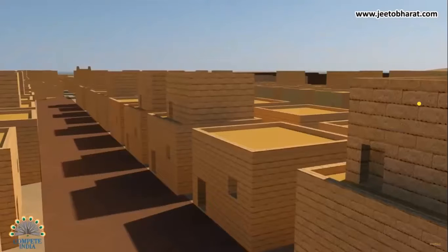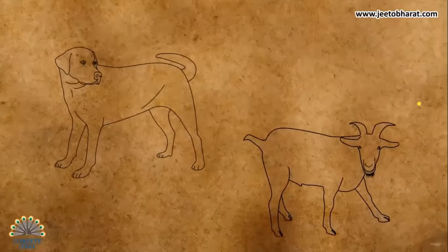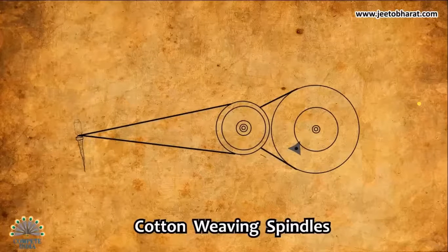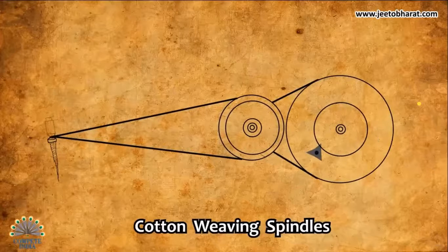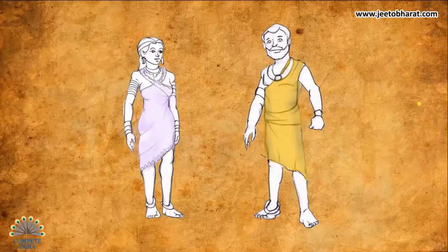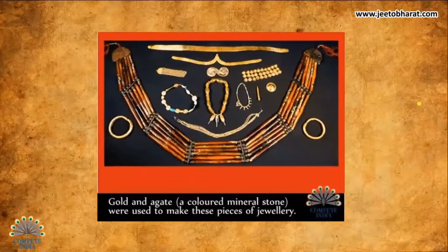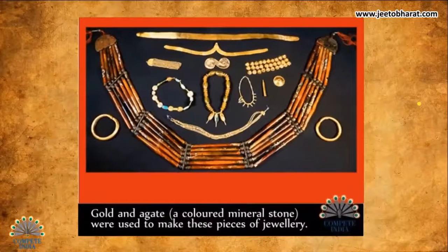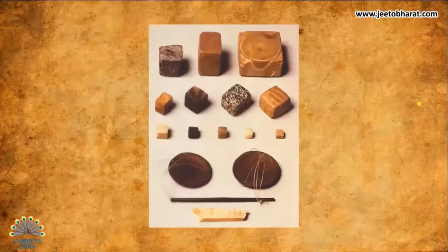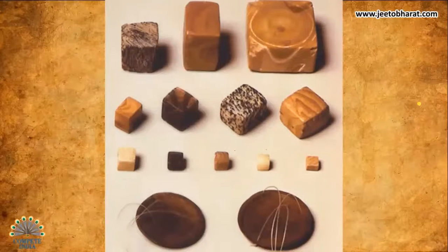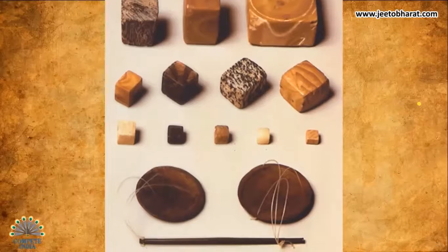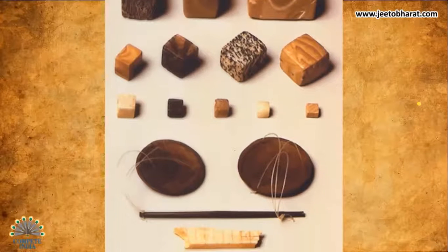There are also evidences that people domesticated animals such as goats and dogs. We get to know about the clothing of Harappan people through some evidences. The finding of clay spindles suggests that cotton weaving and yarn spinning was practiced by women at home. It is believed that women usually wore skirts and men wrapped long pieces of cloth around themselves. Both men and women were fond of ornaments — men wore amulets and women wore bracelets and necklaces. Ornaments made of beads of shell, gold, and silver were used. The system of weights and measures was also well developed, with cubical and spherical weights made of chert, jasper, and agate found at many sites.